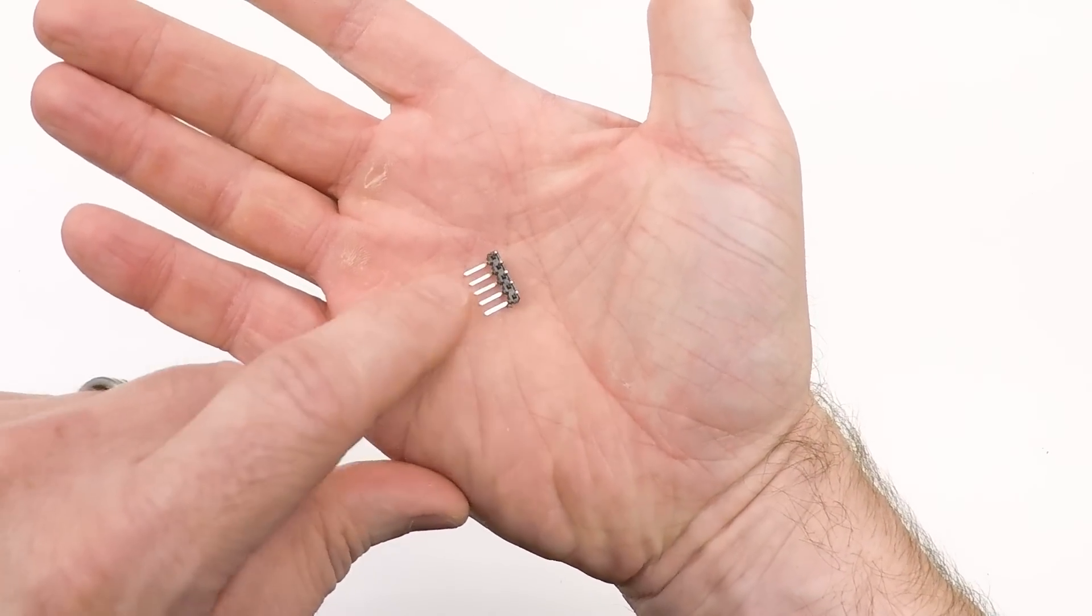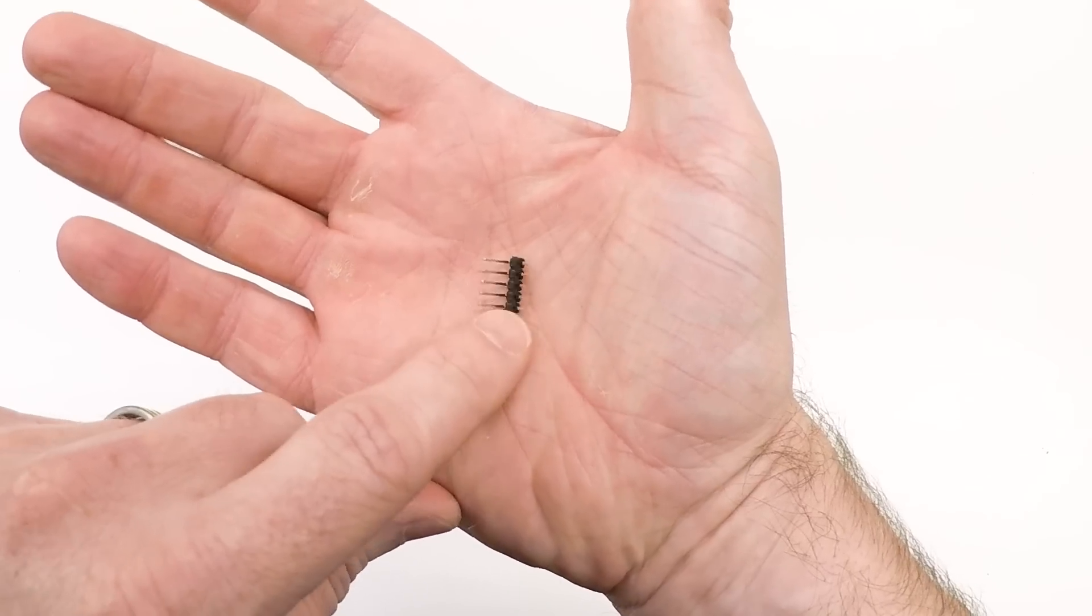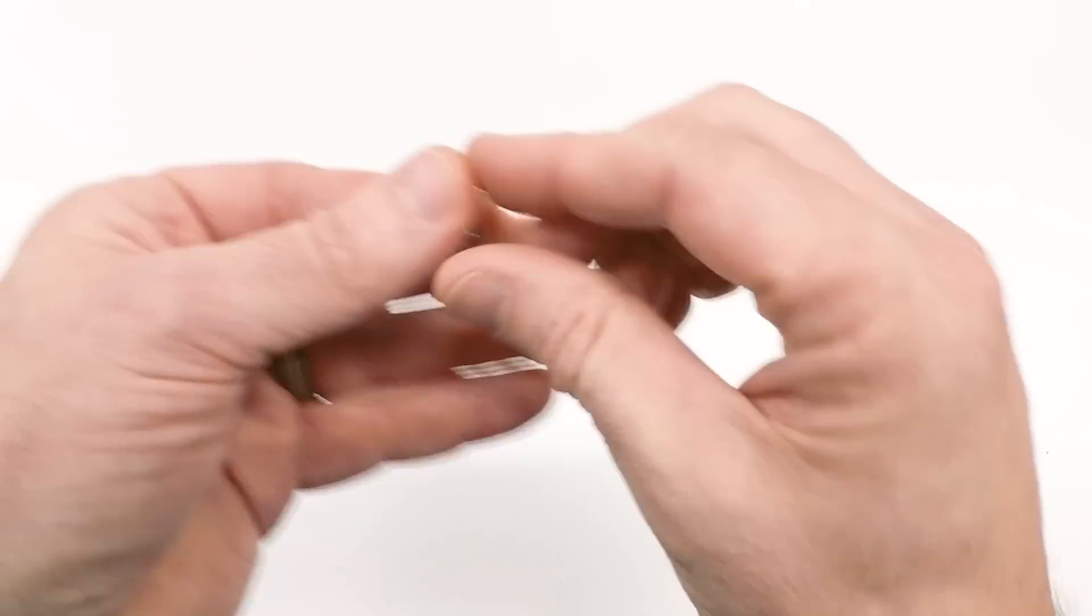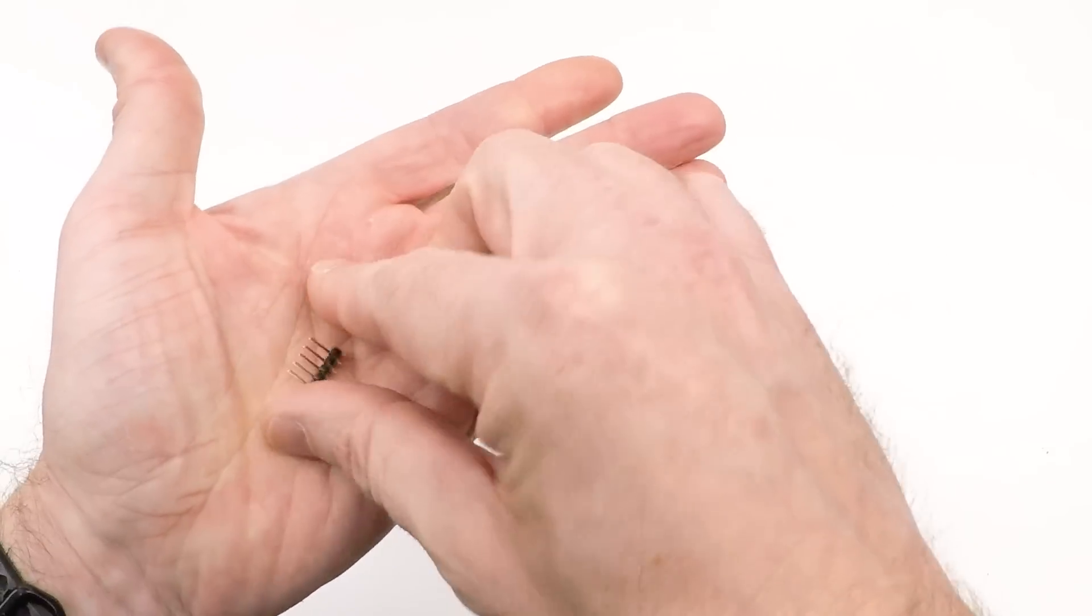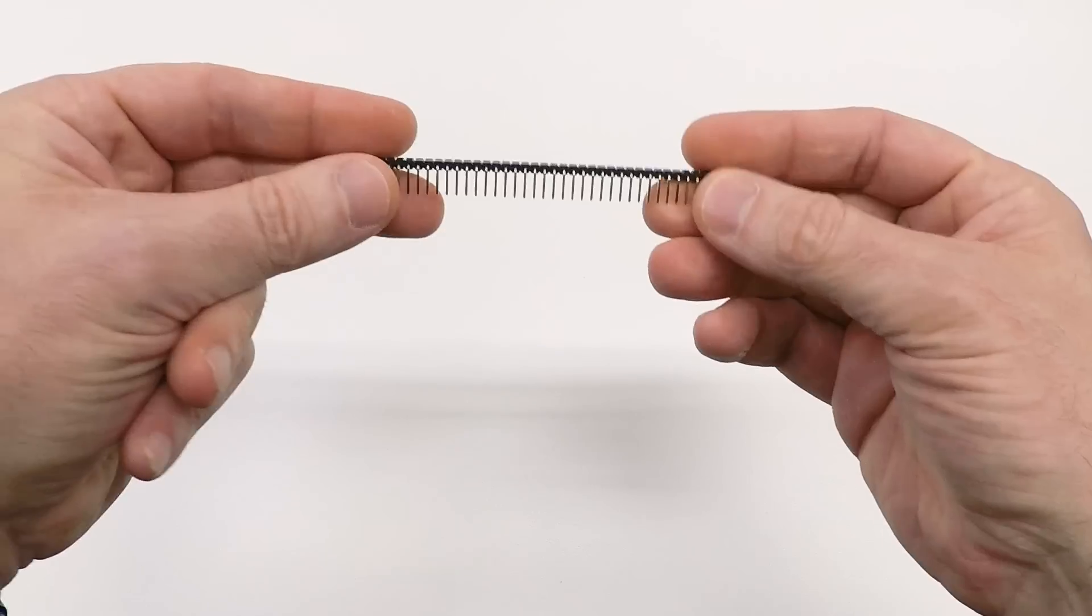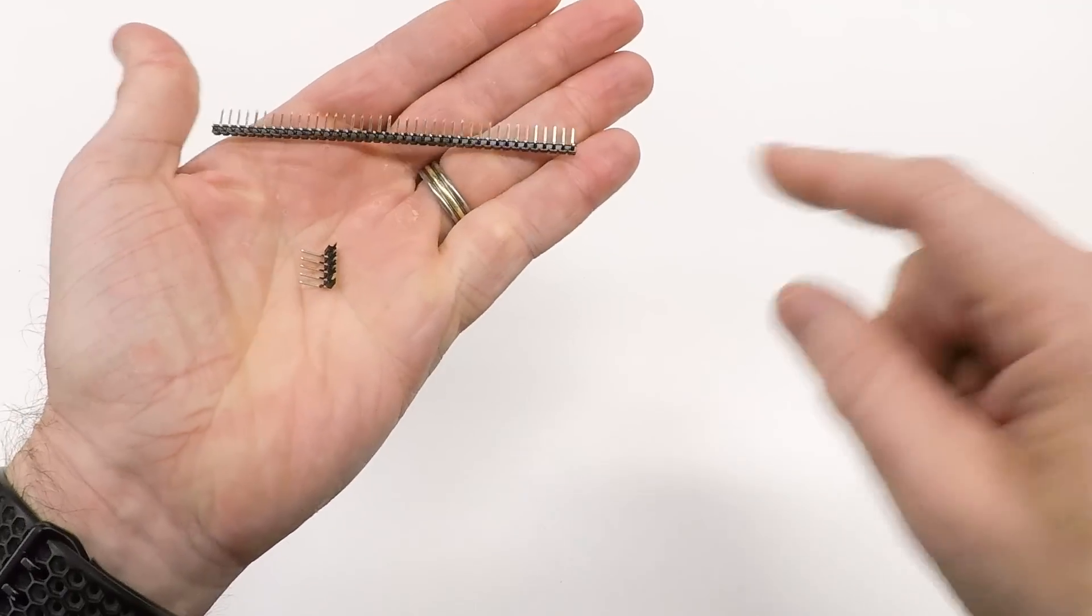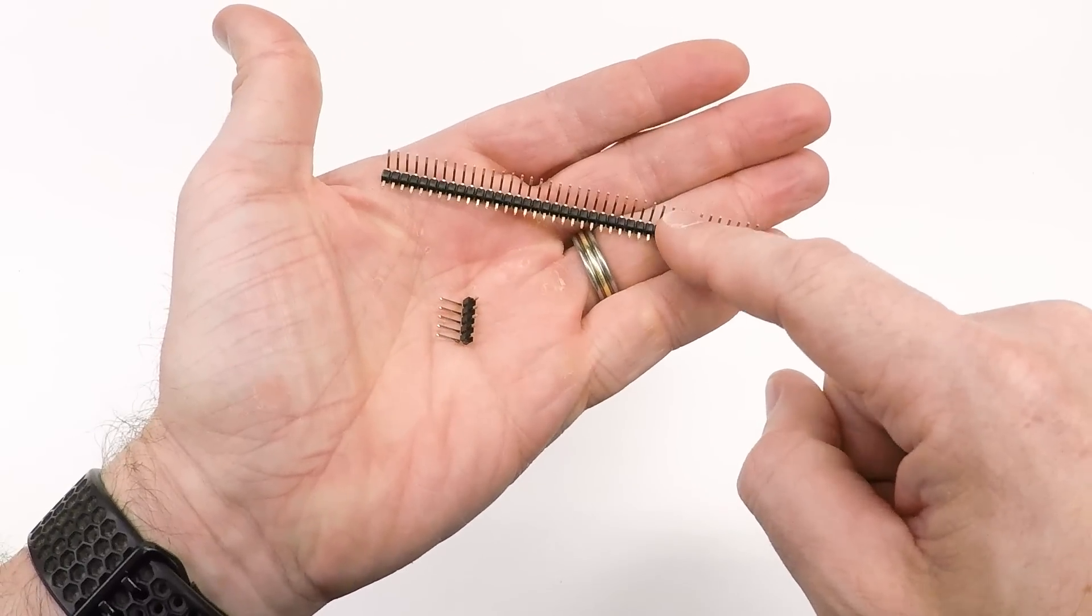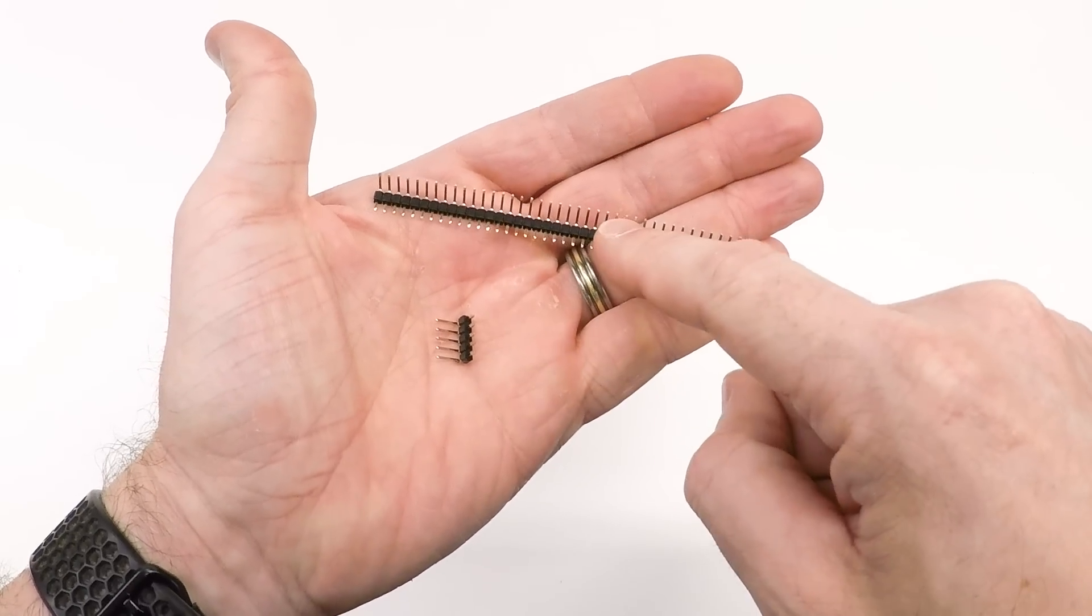As you can imagine, I go through a lot of these. Every time I do a run of 300 kits, I need 600 of these. But I don't buy them in this form. I buy them as strips of 40 pins. And the reason I do that is just cost. I can buy 75 of these, which is enough to make 600 of these parts for about $7.